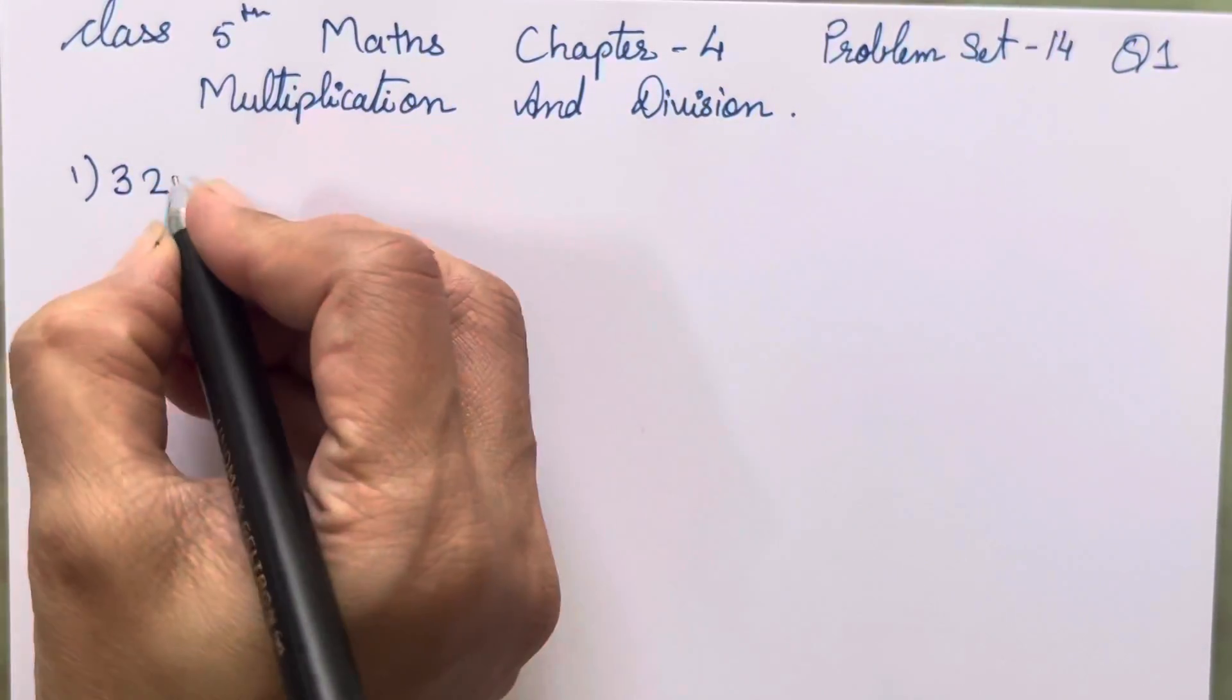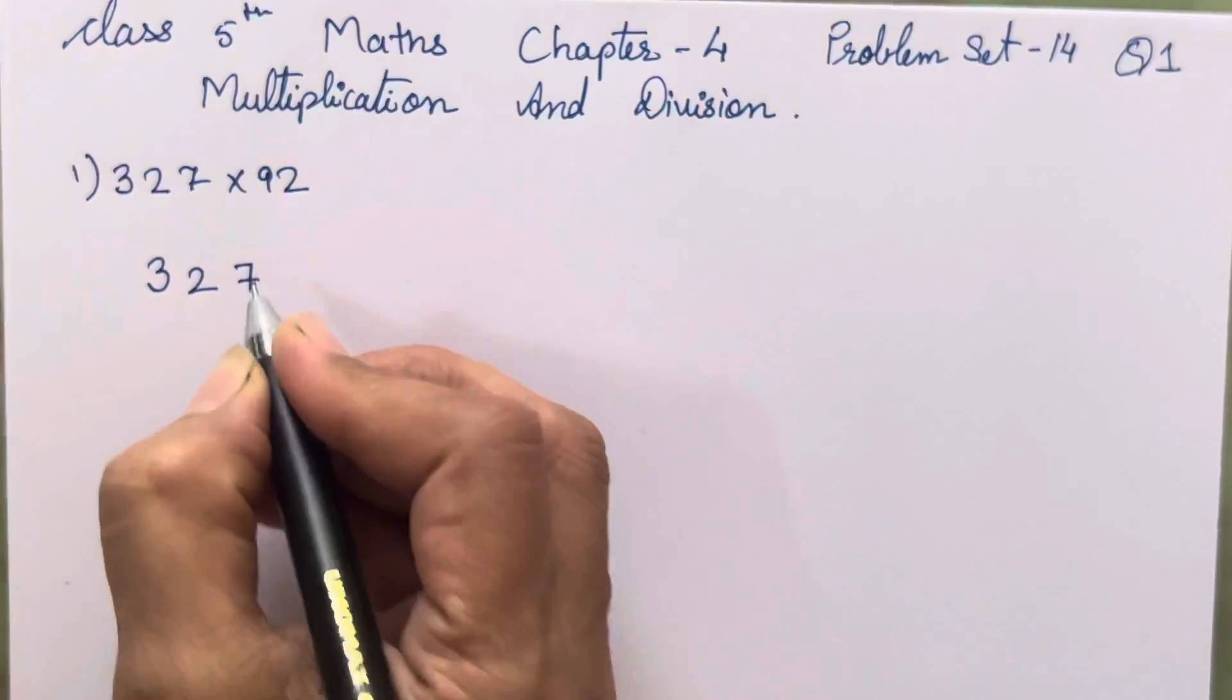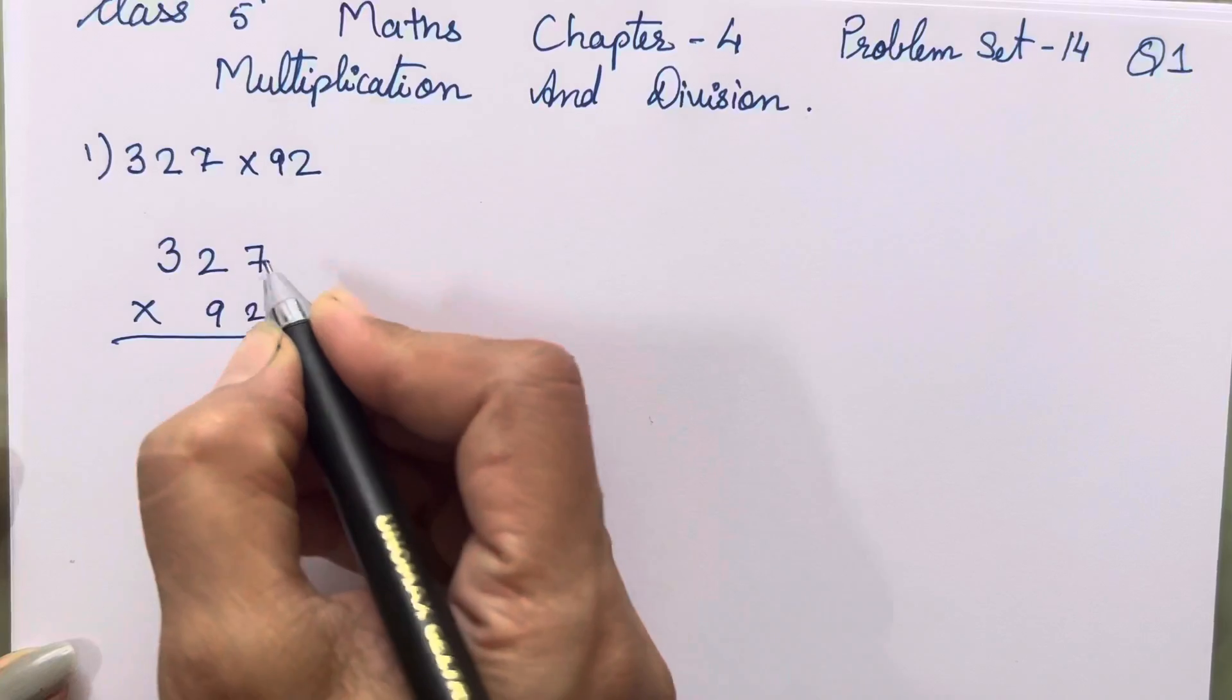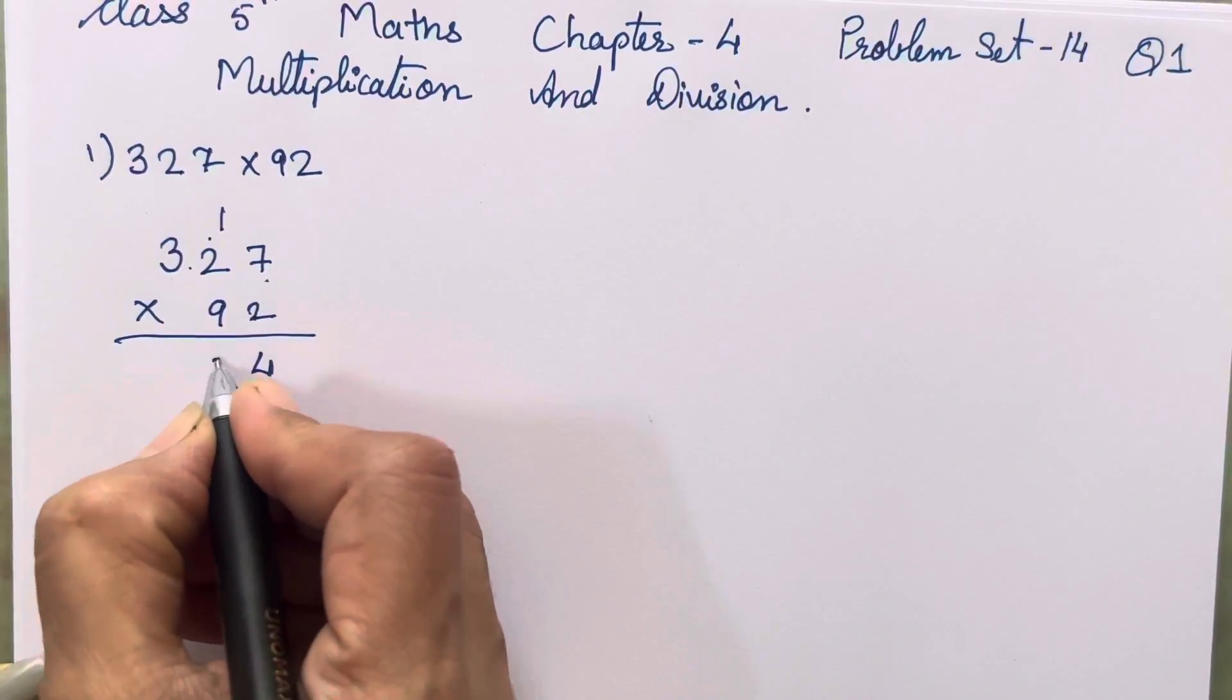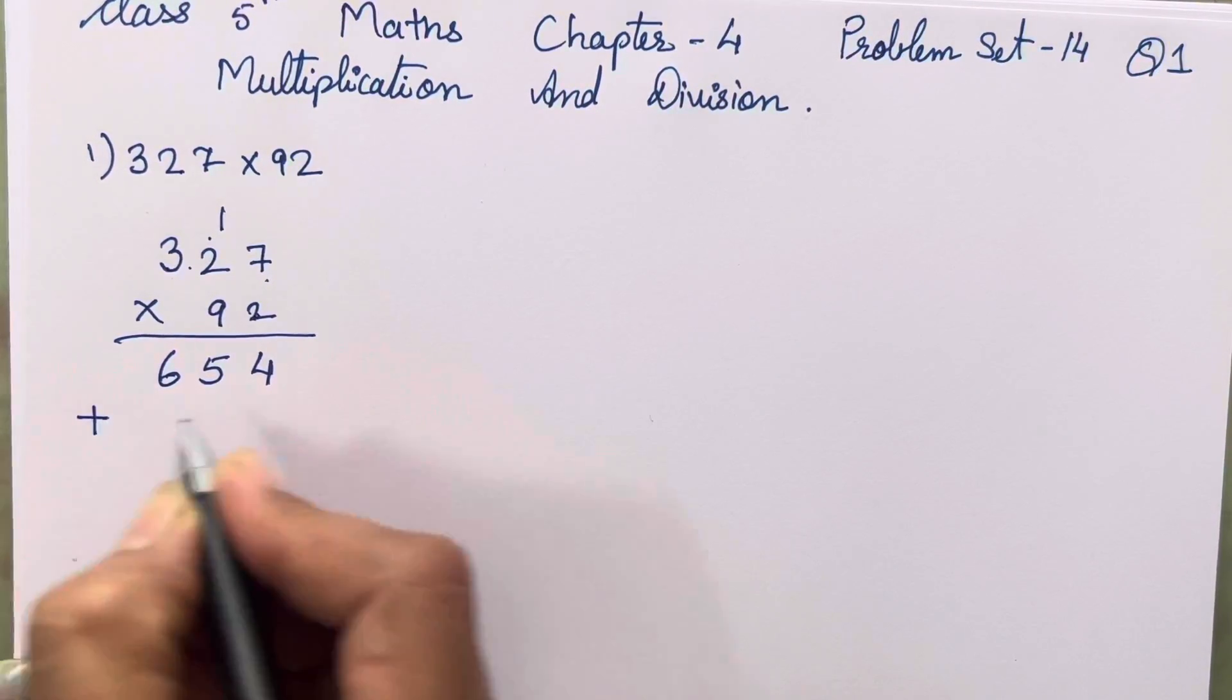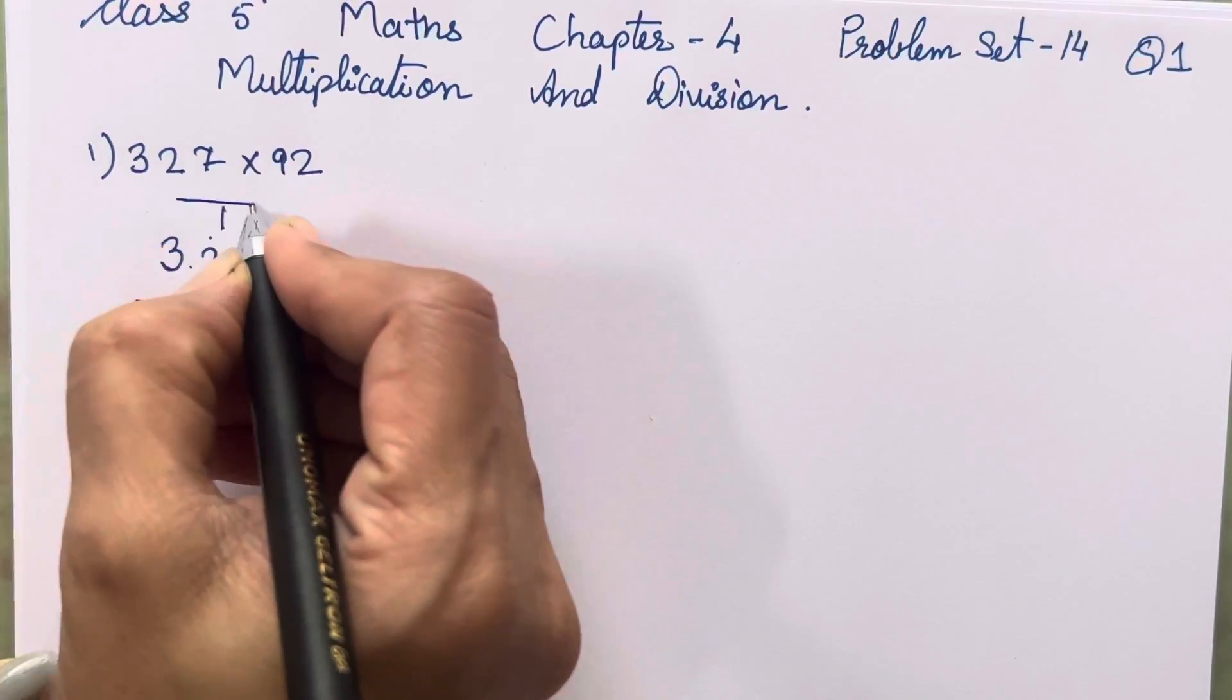So it is 327 into 92. Everyone knows how to arrange the numbers, just below each other. Now 2 sevens are 14, 2 twos are 4 plus 1 is 5, 3 twos are 6. So we all know how to multiply the first digit.